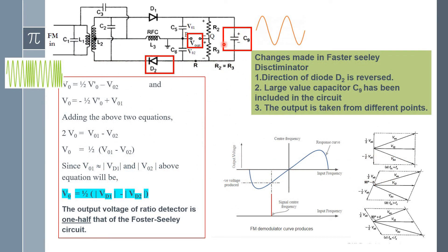Because the diode is in reverse connection, the capacitor charge will also reverse. Hence the voltages V01 and V02 across the two capacitors are added. The potential across the two resistors R2 and R3 is maintained in the C9 capacitor. However, V_output is taken at a different point, so the net output is V_output = (1/2)(V01 − V02).